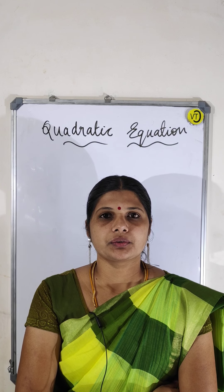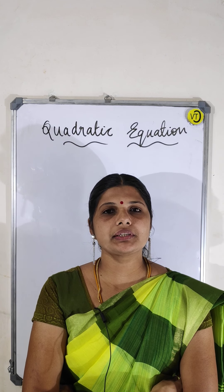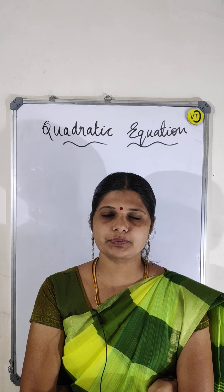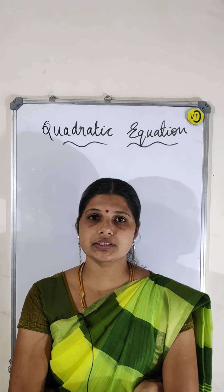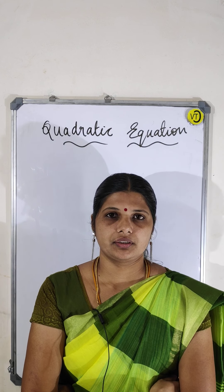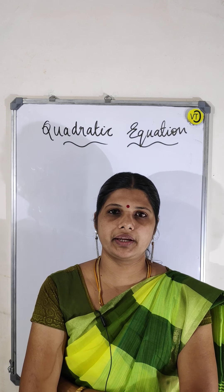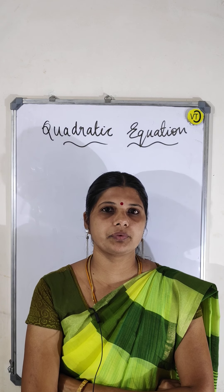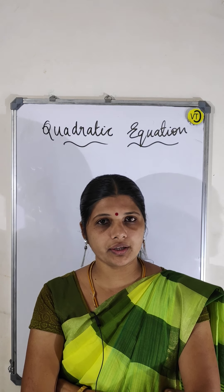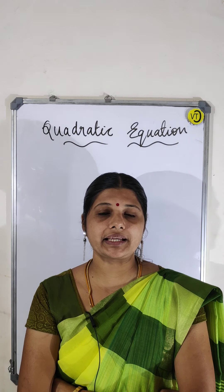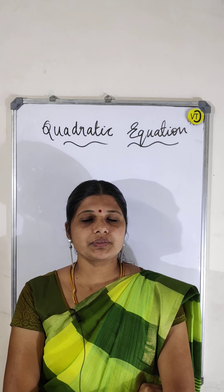Hello students, today we will discuss the quadratic equation elaborately. A quadratic equation is in the form ax² + bx + c = 0. You know the conditions for quadratic equations. This quadratic equation will have two factors — because it has x², you get two factors. For a cubic polynomial, you get three factors.